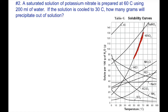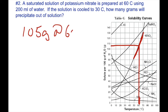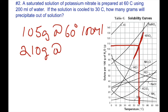We find 60 degrees on the x-axis, go up to the KNO3 line, move across to the y-axis, and read approximately 105 grams at 60 degrees C for 100 mLs of water. But the question uses 200 mLs, so we double the value: 105 times 2 equals 210 grams at 60 degrees for 200 mLs.